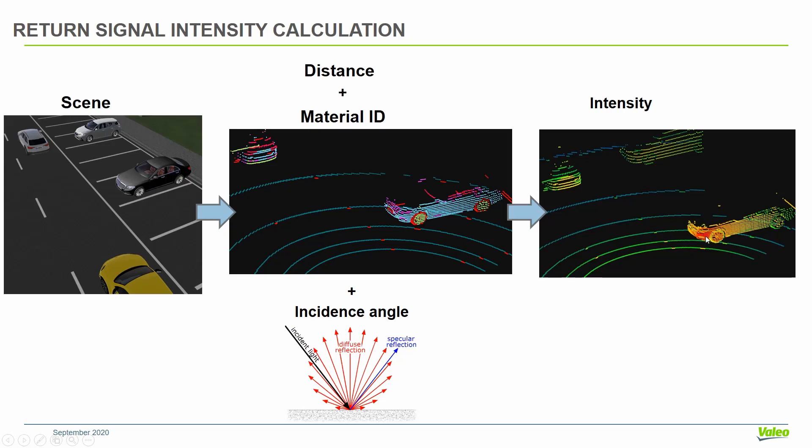You can see that here red means very high intensity, because it is very close to the sensor and the incidence angle is right. Moving far away from the sensor, the signal decreases.